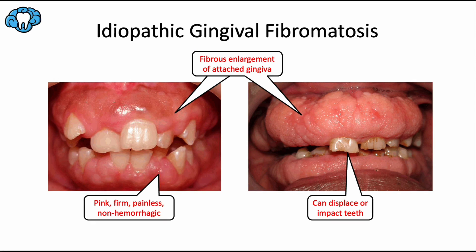Next is idiopathic gingival fibromatosis, an uncommon benign hereditary condition — sometimes also called hereditary gingival fibromatosis. The word idiopathic means we don't know what causes it. It's a slowly progressive condition that leads to gradual fibrous enlargement of both the maxillary and mandibular keratinized attached gingiva. While we don't know an exact cause, we do know it involves an increase in the number of fibroblasts and increased production of collagen and fibronectin, in addition to a reduction in the matrix metalloproteinases that degrade collagen — leading to thick protein buildup and fibrous enlargement.